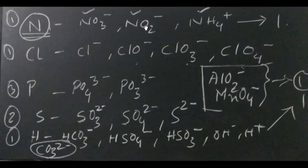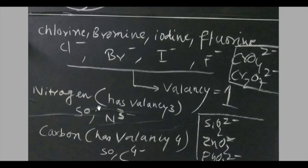Same is the case with nitrogen. So though nitrate, nitrite and ammonium will have a valency of 1, but simply nitrogen, if it is nitride group, it will have a valency of 3. So you can remember that easily.